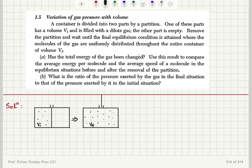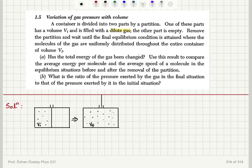Let's talk about this problem on the variation of gas pressure with volume. A container is divided into two parts by a partition. One part has a volume V_initial and is filled with a dilute gas, and the other part is empty. We remove the partition and wait until the final equilibrium condition is attained, where the molecules of the gas are uniformly distributed throughout the entire final volume V_final.